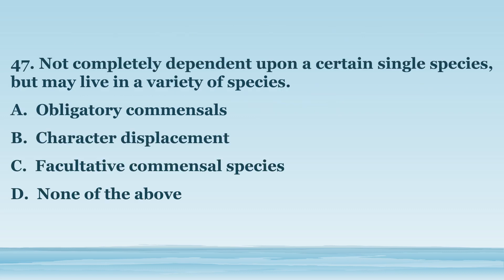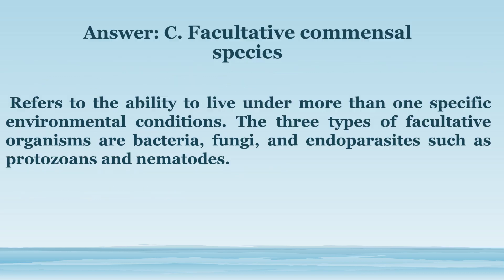Number 47. Not completely dependent upon a certain single species, but may live in a variety of species. A. Obligatory commensals. B. Character displacement. C. Facultative commensal species. D. None of the above. The answer is letter C. Facultative commensal species. Refers to the ability to live under more than one specific environmental condition. The three types of facultative organisms are bacteria, fungi, and endoparasites such as protozoans and nematodes.